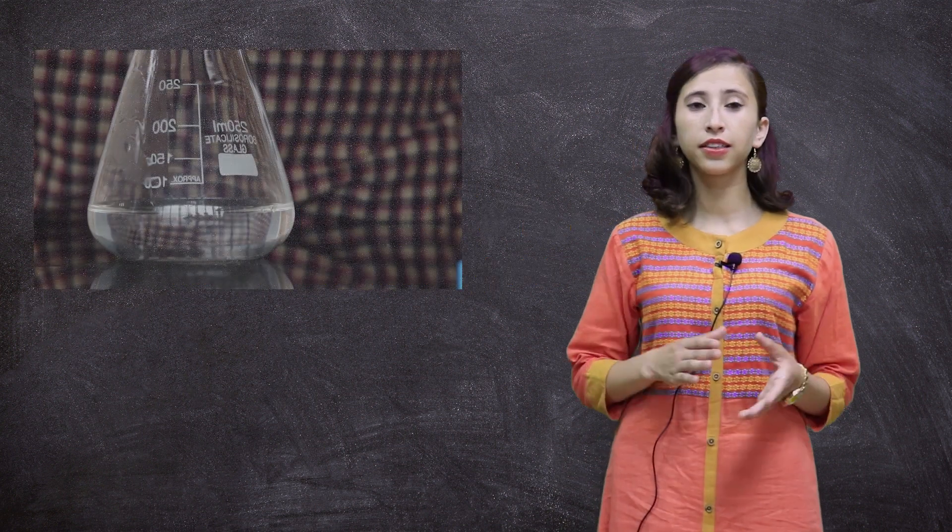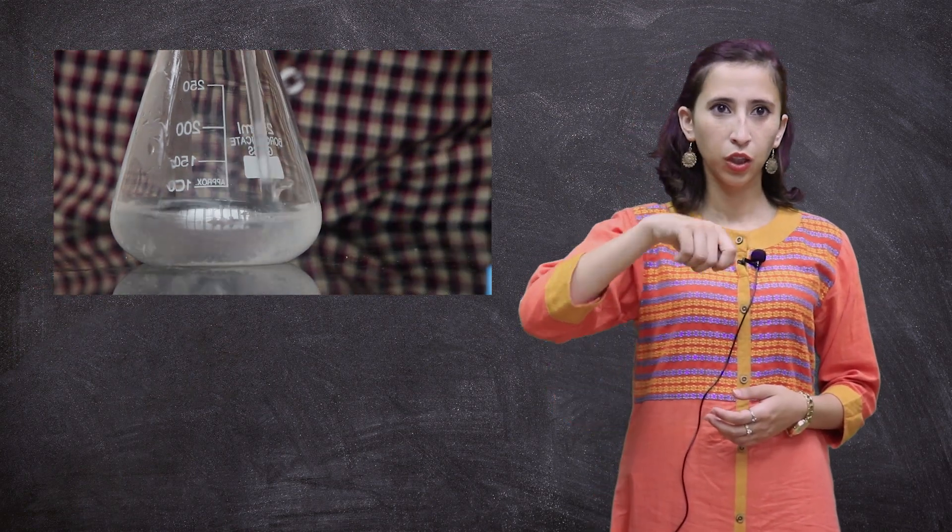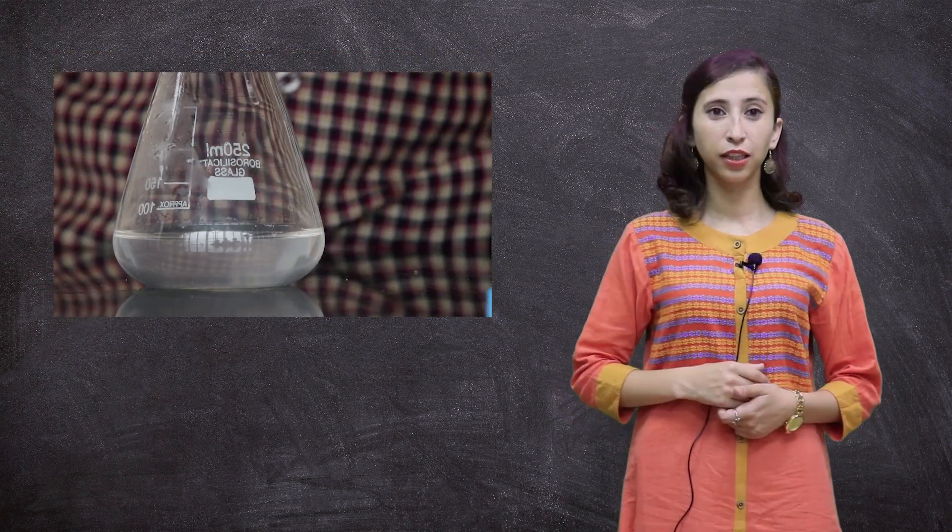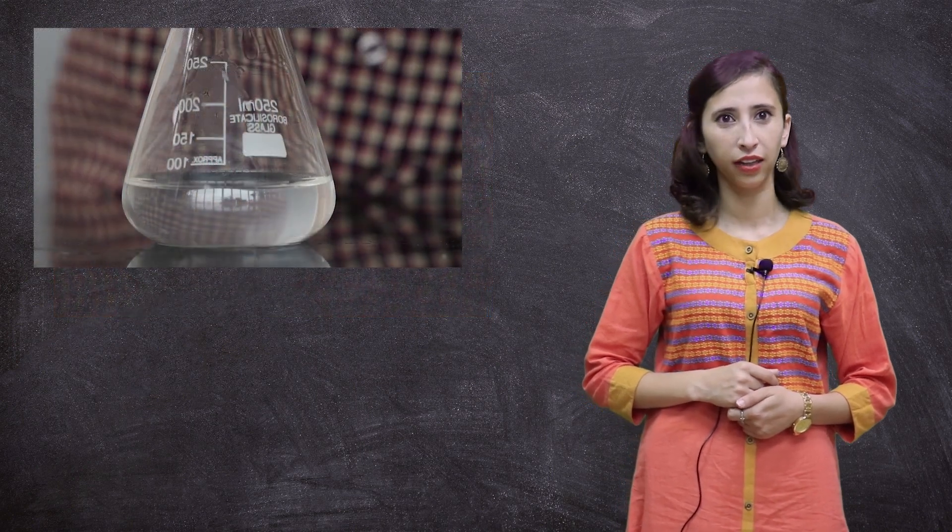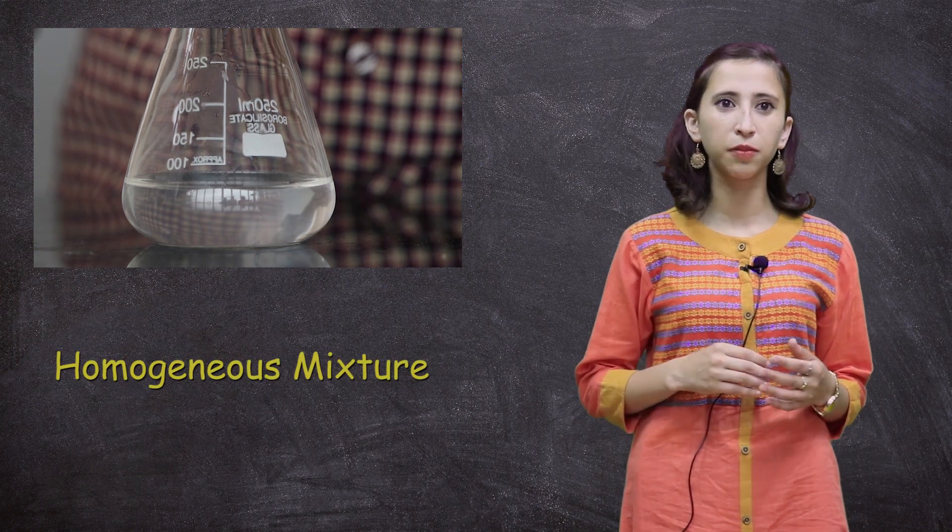Here is a tablespoon of salt mixed with water. Stirring the beaker will result in a mixture which is homogeneous in nature. That means the mixture appears uniform to the human eye. Hence, this mixture is called a homogeneous mixture.